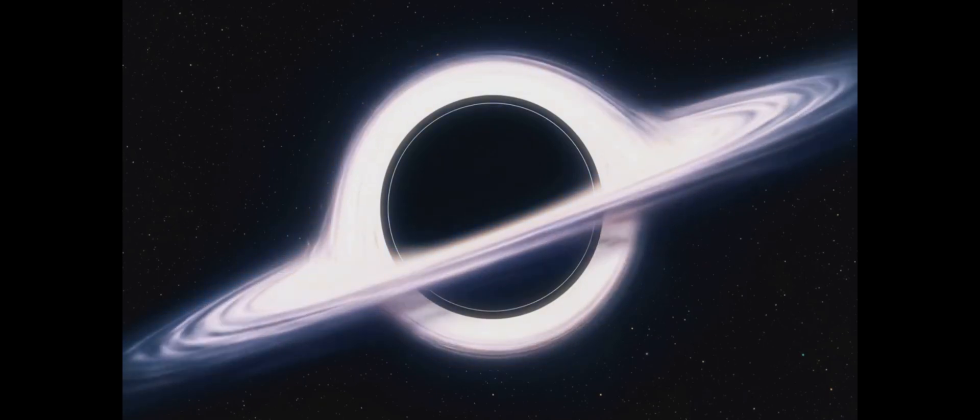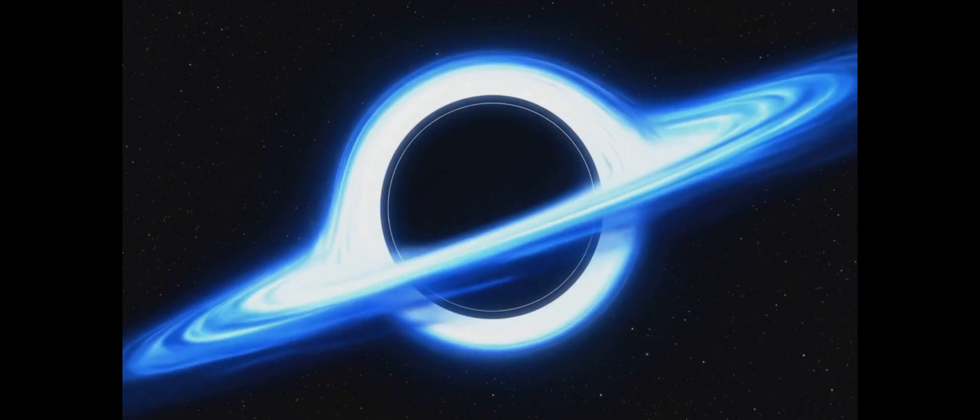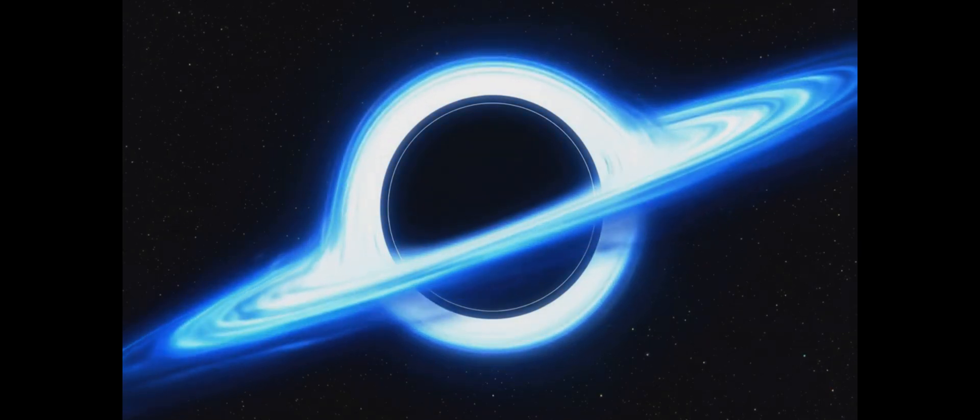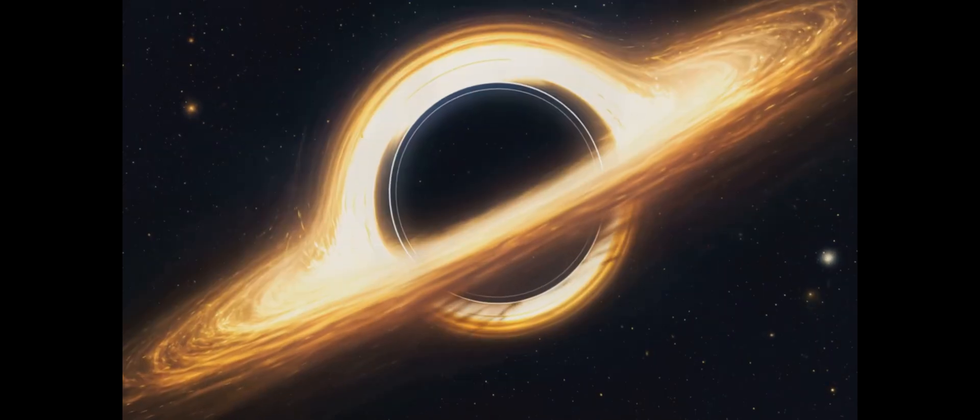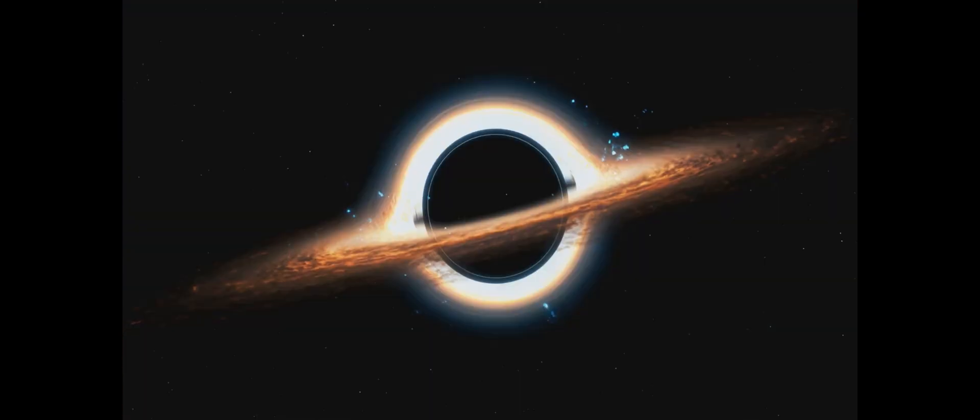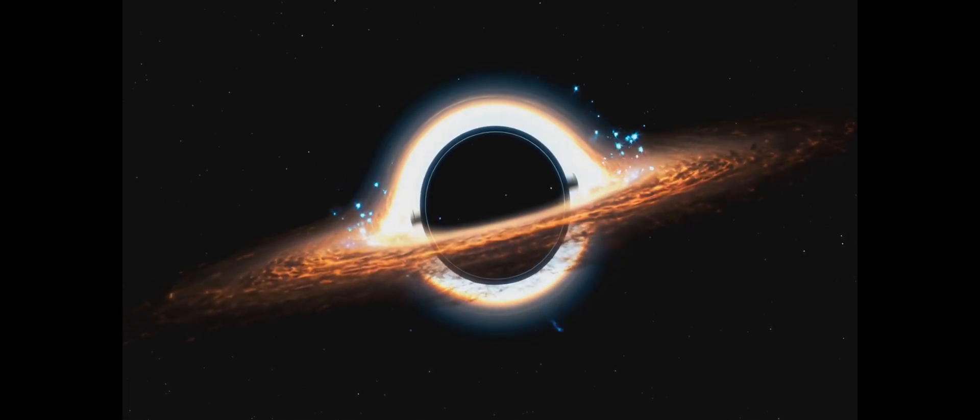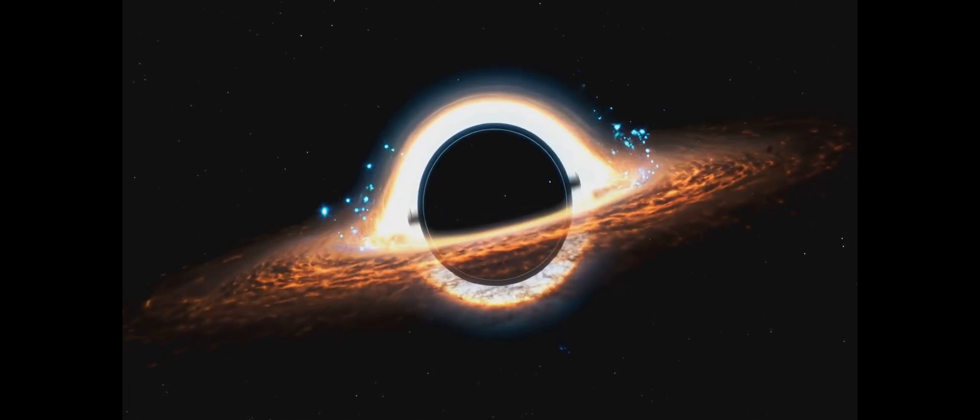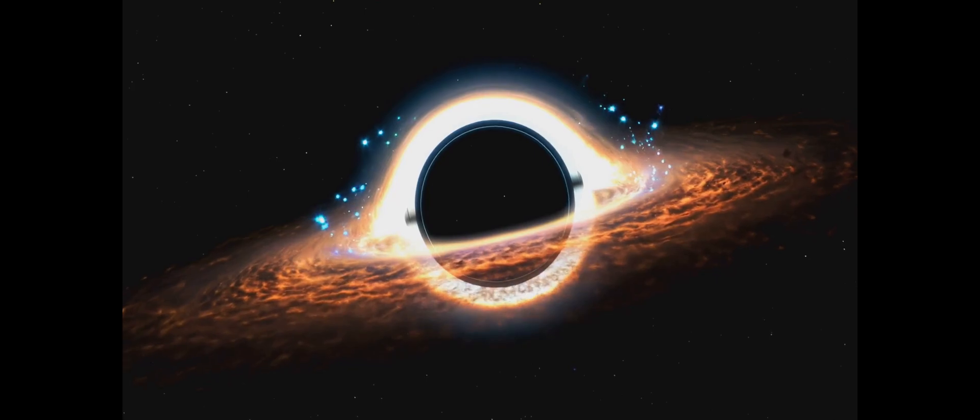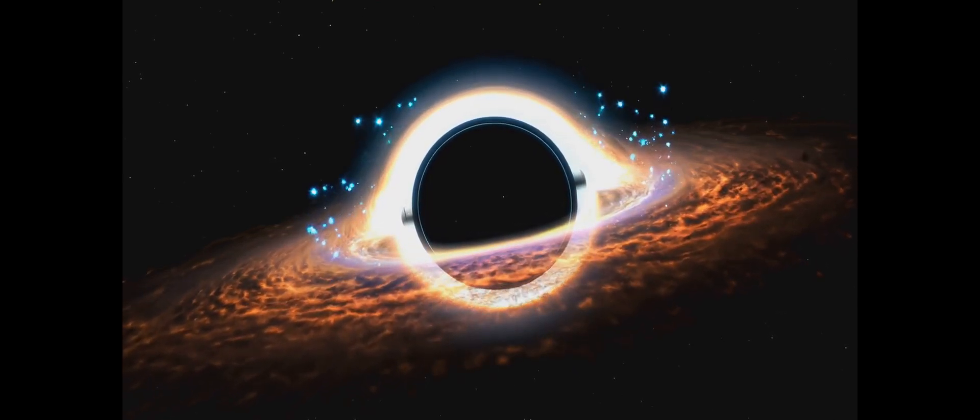One of the most striking features is the accretion disk, a swirling maelstrom of gas and dust that often surrounds a black hole. As this material spirals inward, it's heated to extreme temperatures, emitting light across various wavelengths, including X-rays.